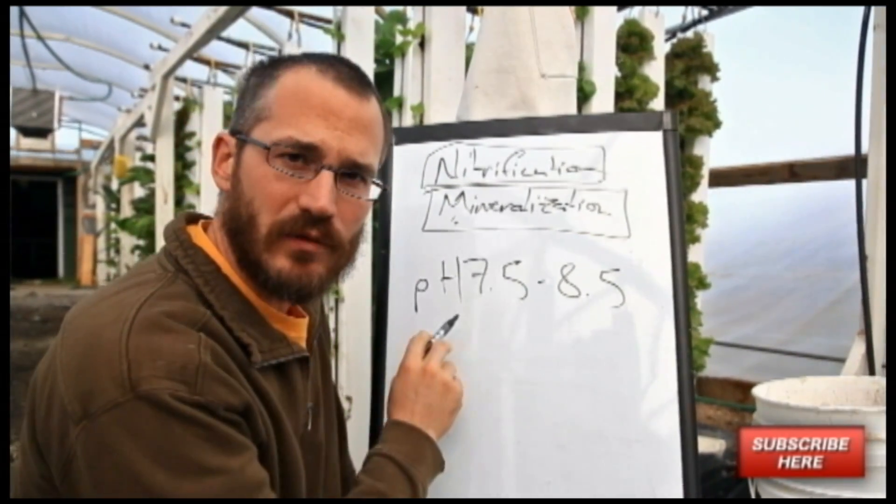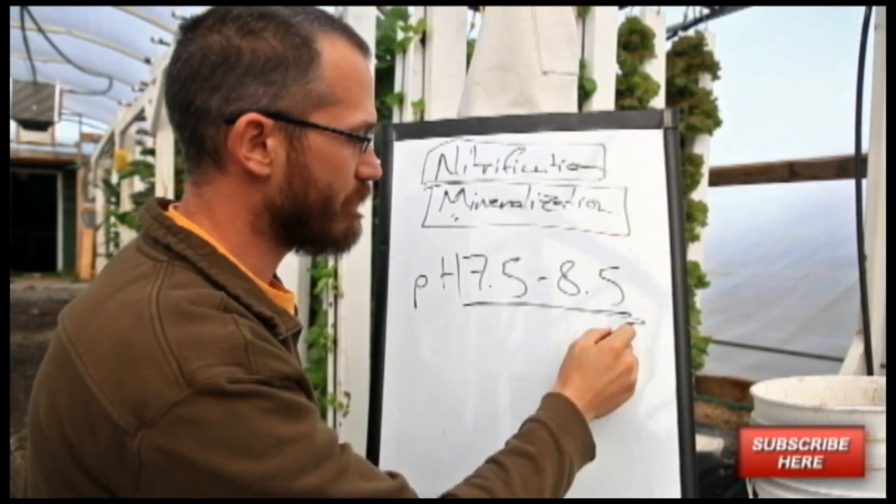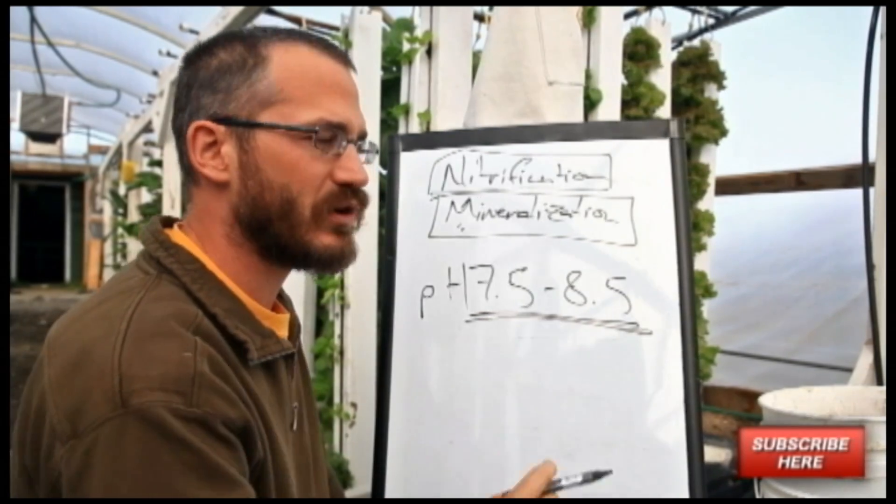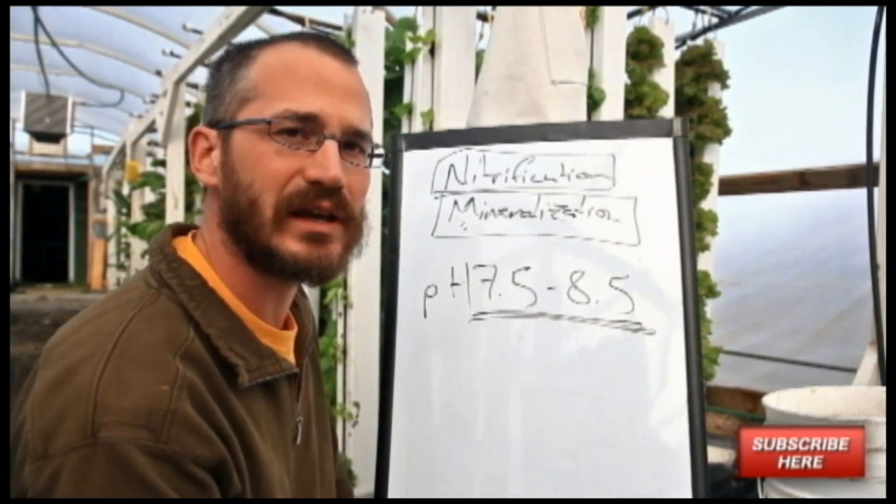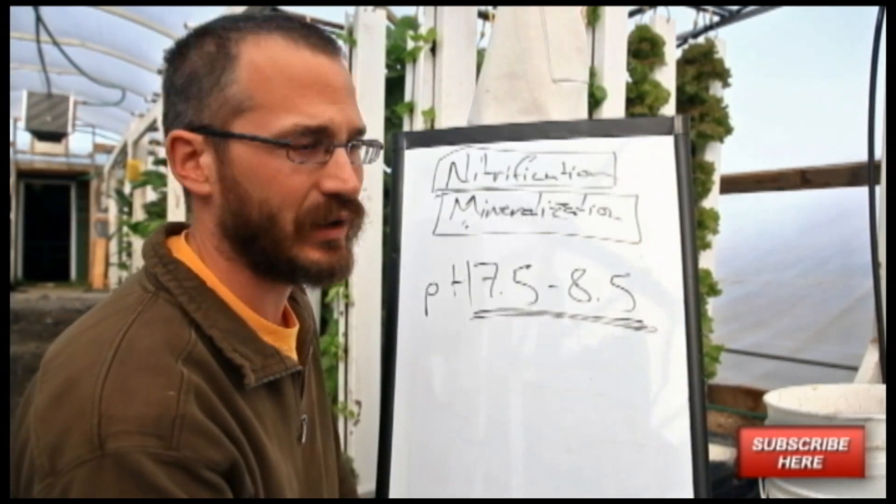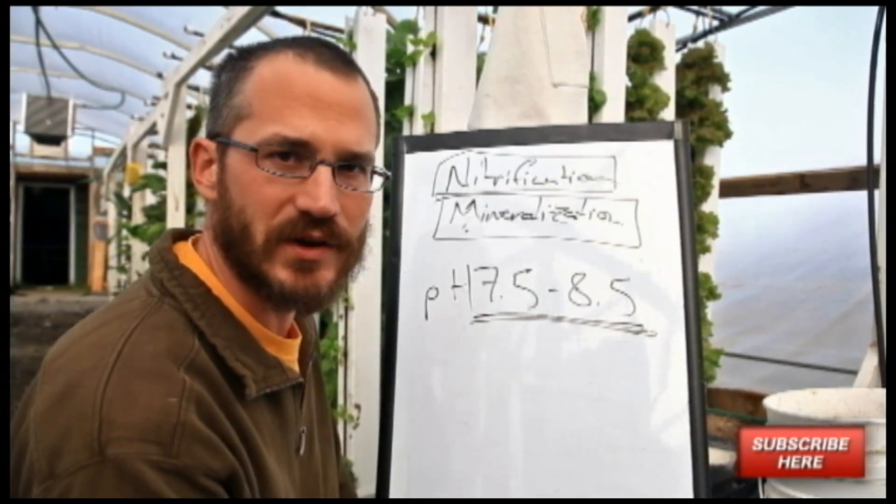This is true for nitrosomonas and nitrobacter. They tend to like these more basic pH values. But the reality is that both of those bacterial species will function in lower pH ranges, and there's also lots of other bacteria that do the same work at lower pH ranges.